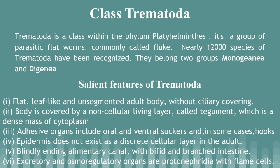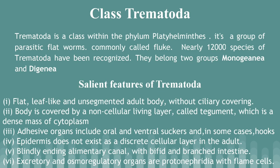Trematoda is a class within the phylum Platyhelminthes. It is a group of parasitic flatworms, formerly called flukes. Nearly 12,000 species of Trematoda have been recognized. They belong to groups Monogenea and Digenea.